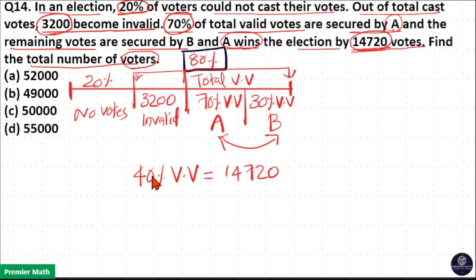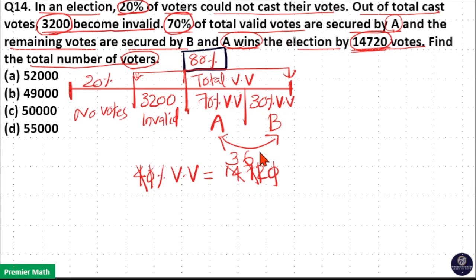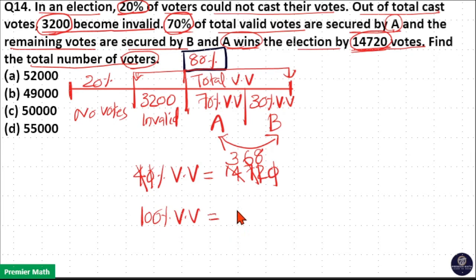Here, the zeros cancel. 4 goes 3 times into 14, remaining 27. 4 goes 6 times into 27, remaining 32. 4 goes 8 times into 32. So 1% equals 368, meaning 100% of valid votes equals 368 × 100.